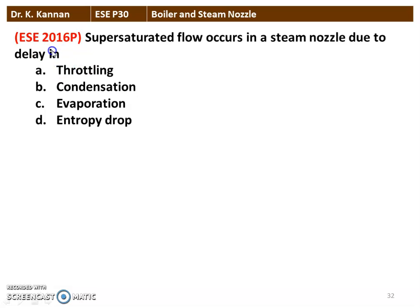Next question from the 2016 question paper: supersaturated flow occurs in the steam nozzle due to the delay in condensation. After the saturation line, the steam is expected to convert into wet steam with formation of water particles. However, this formation of water particles is delayed because of the high velocity of the steam — this delay in the condensation process is what causes supersaturated flow.